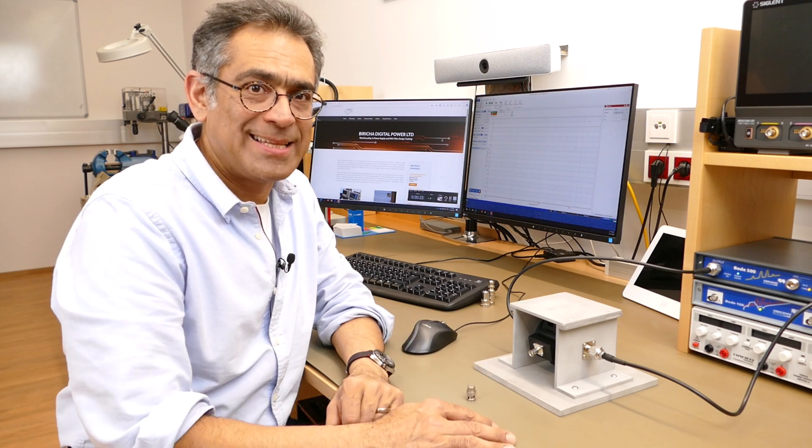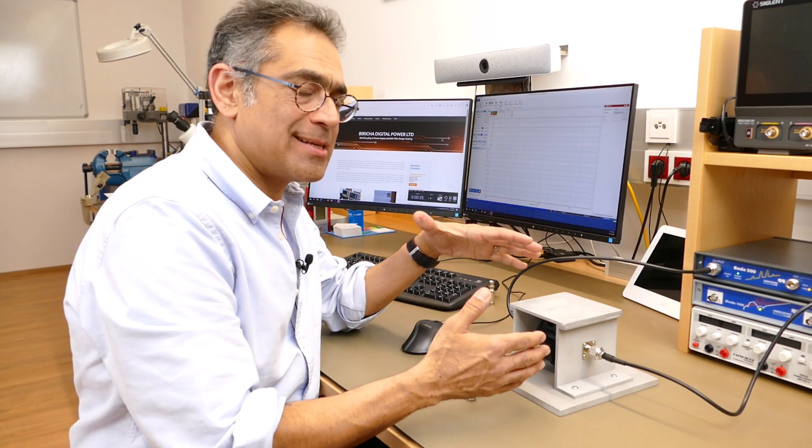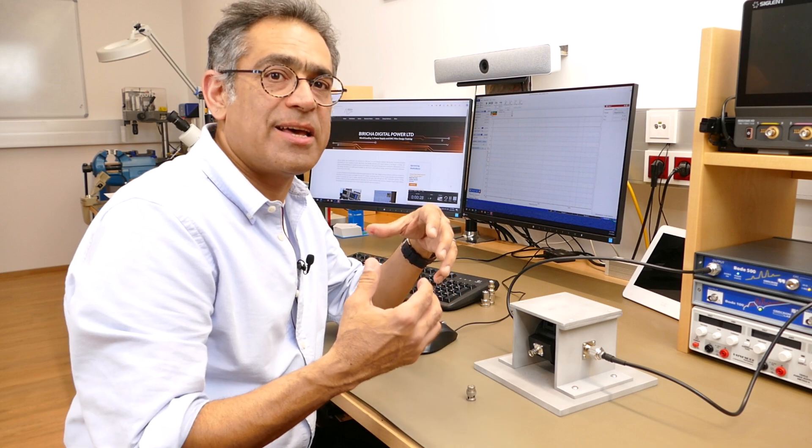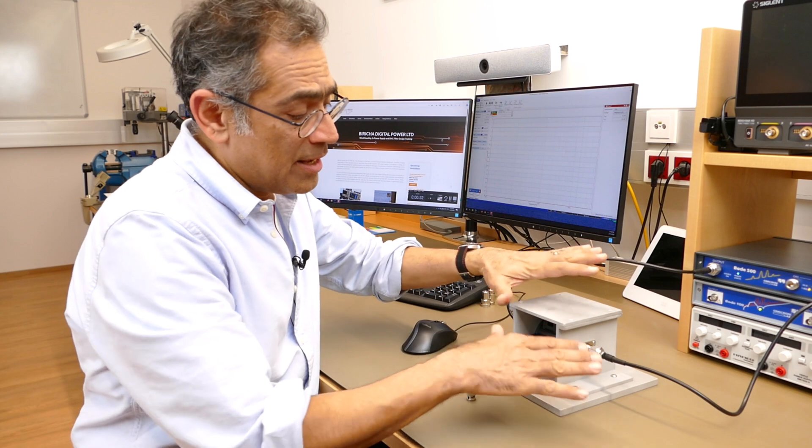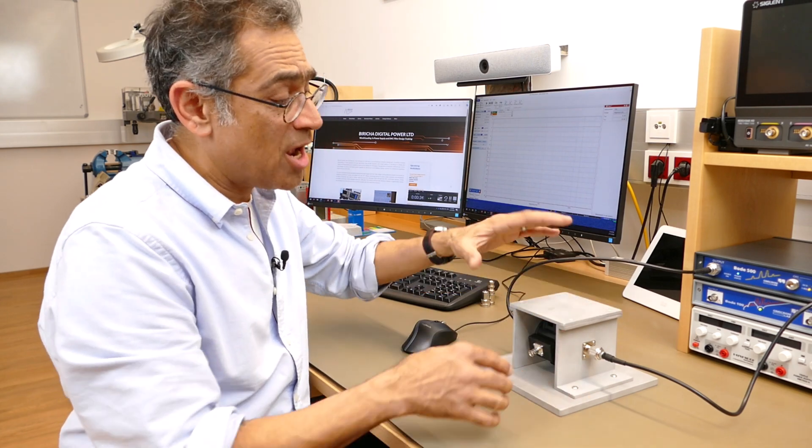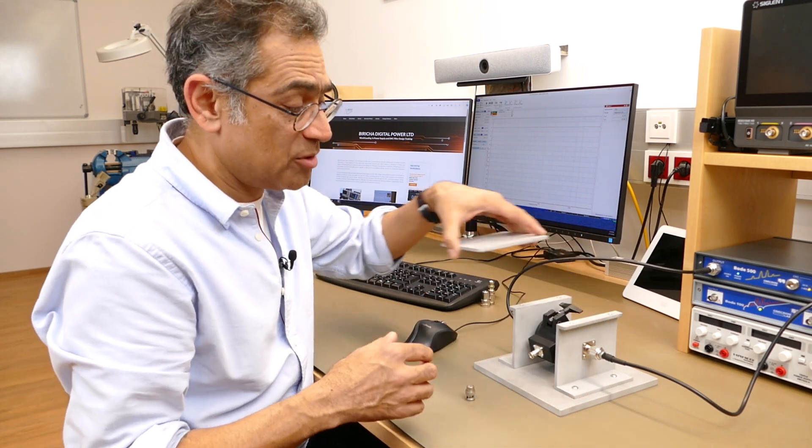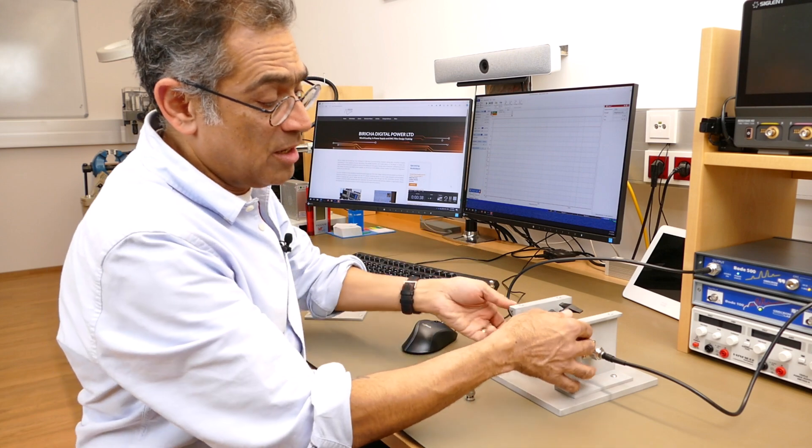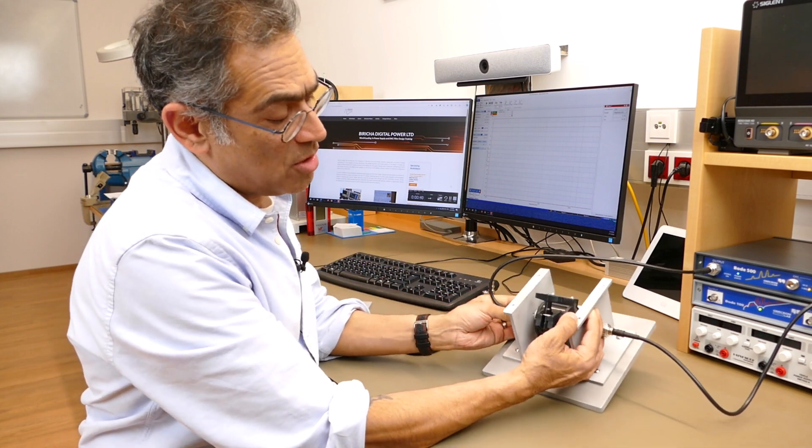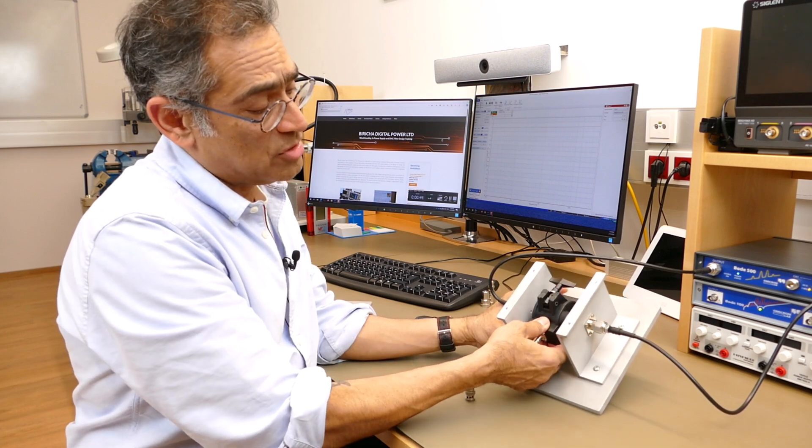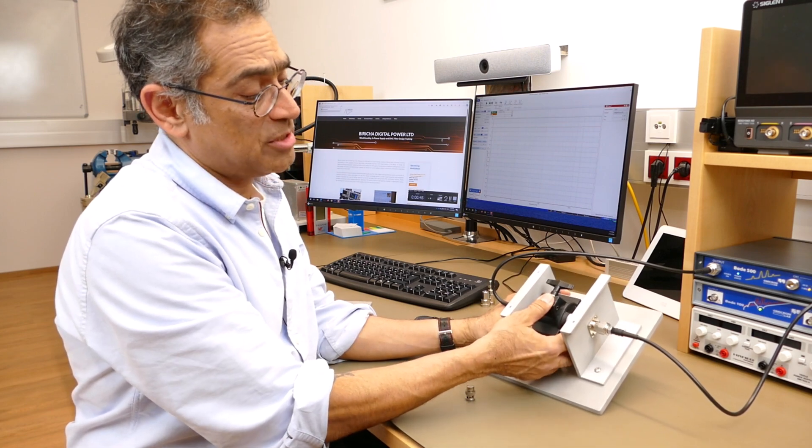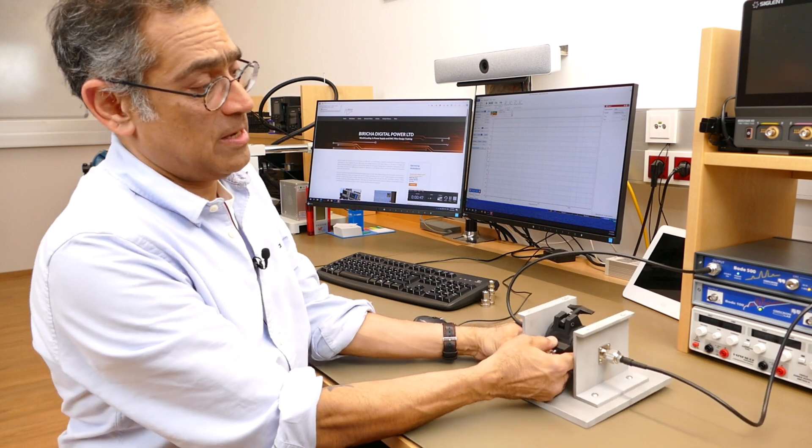So here we are in the lab, and this is the test setup that we use in order to create the transfer impedance plot that I mentioned earlier on. And here is our calibration test fixture - I've actually unscrewed the top so that we can show you what's happening in this video. In reality the top needs to be screwed on. The current clamp is going in the middle of the calibration test fixture.